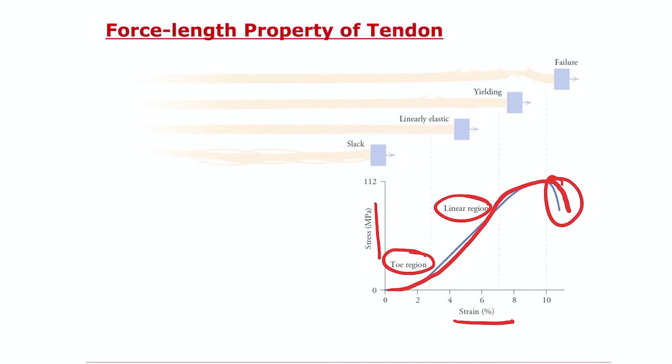So why do we have this toe region? If you think about stretching of tendon, what happens is when you first start to stretch it at these short lengths, most of the little fibrils within tendon are slack. But then once you stretch it beyond that length, the tendon slack length, you start to get into this linear region.